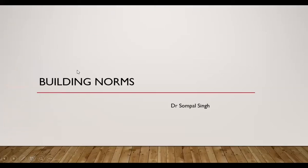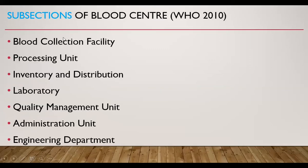Now let us see what is the space requirement or building norms for Blood Bank. According to WHO literature, there are various subsections of a Blood Centre or Blood Bank which include: Blood Collection Facility, Processing Unit, Inventory and Distribution Unit, Laboratory Unit, Quality Management Unit, Administration Unit, and Engineering Department.